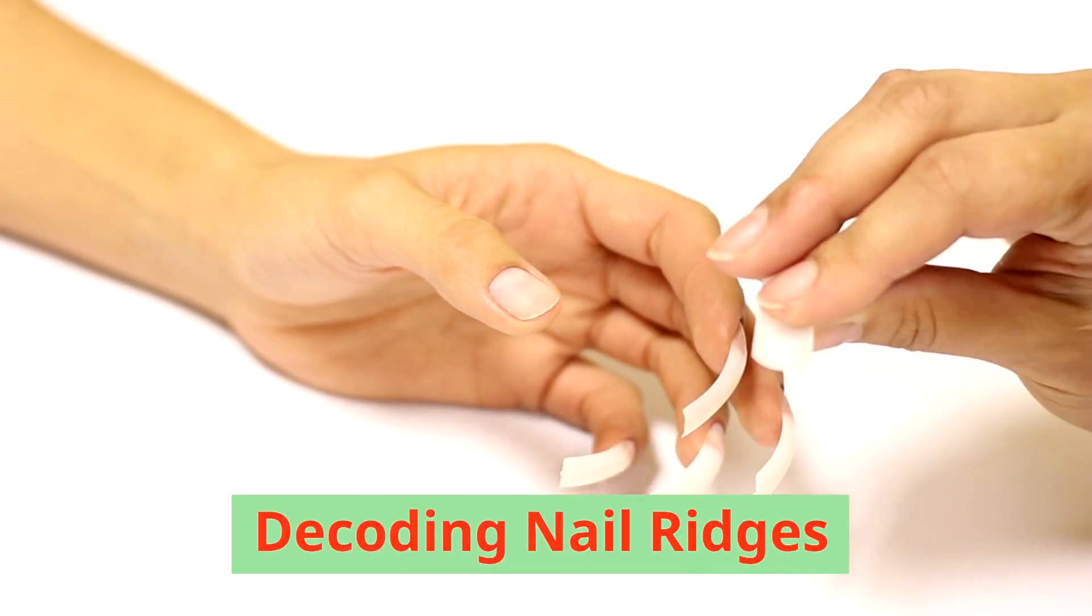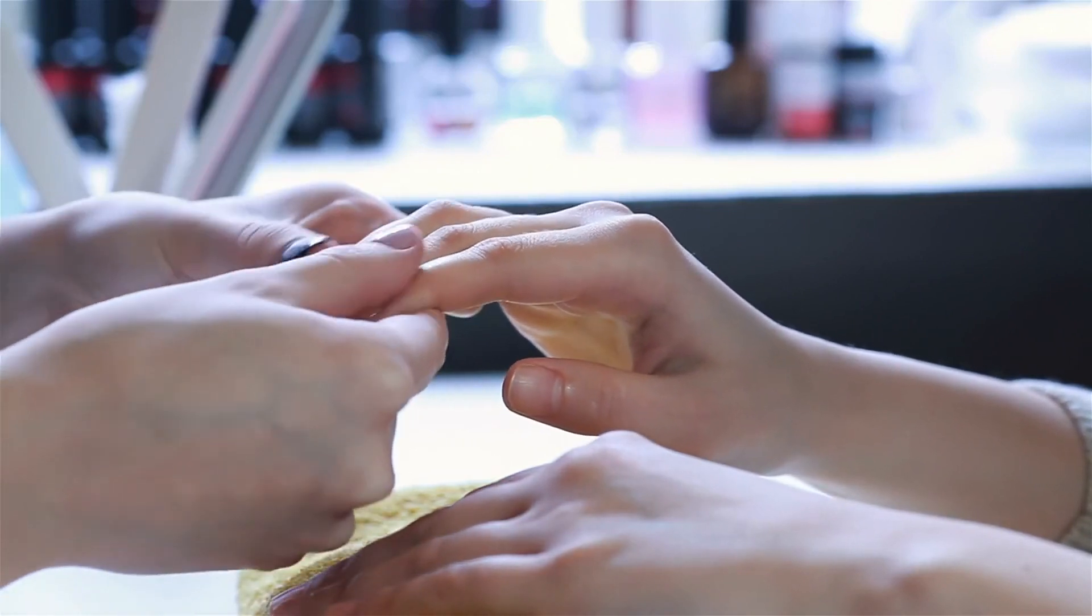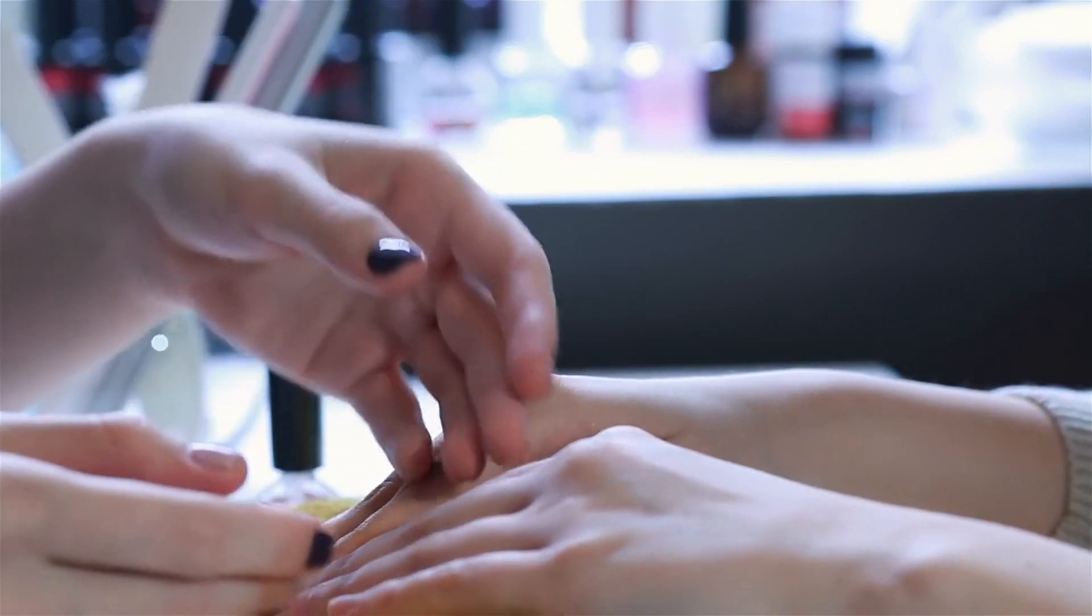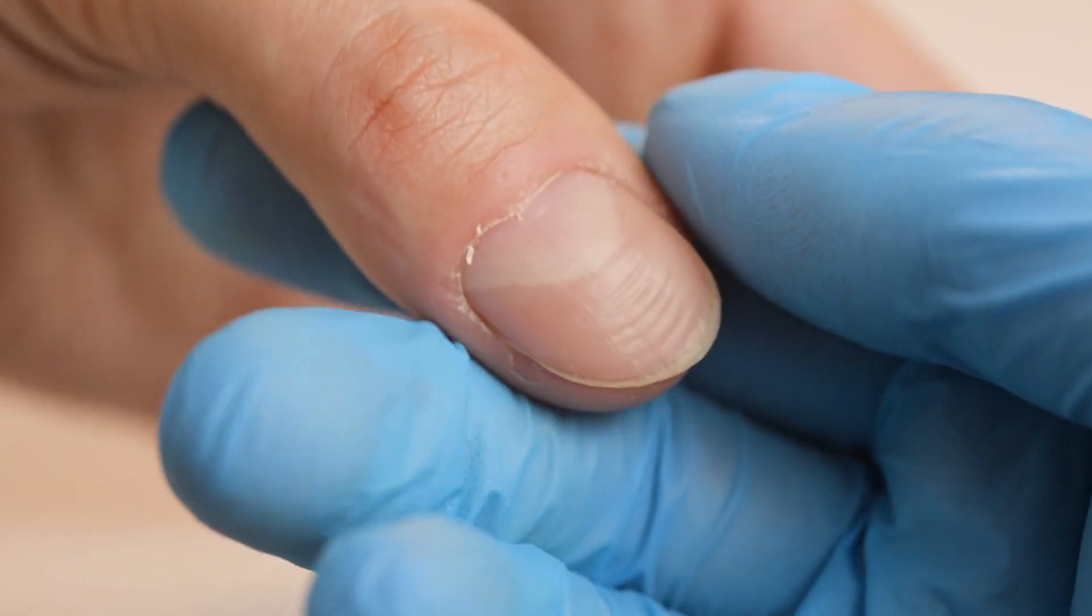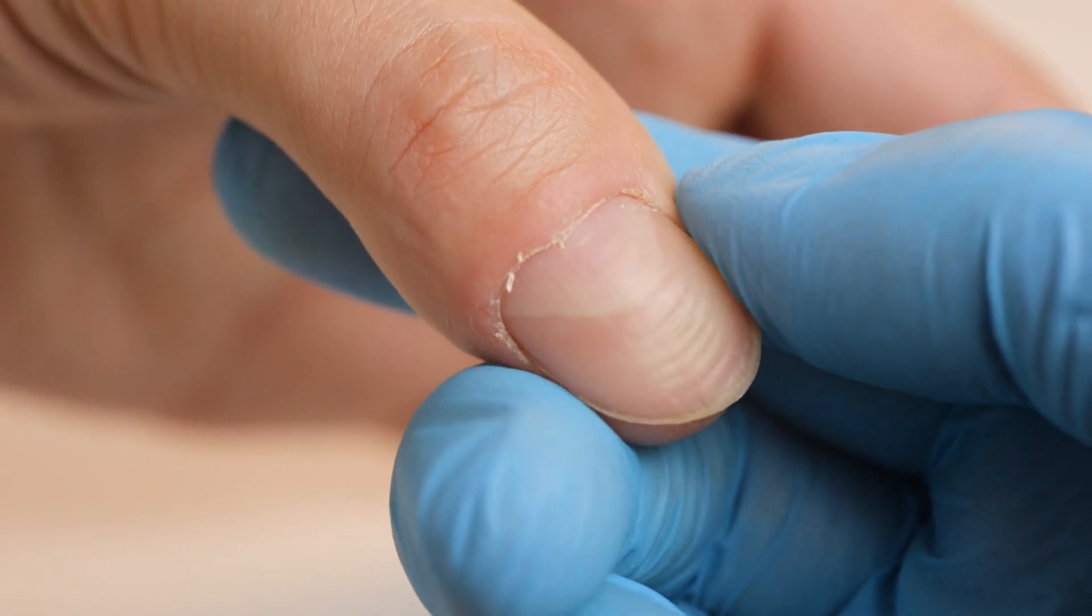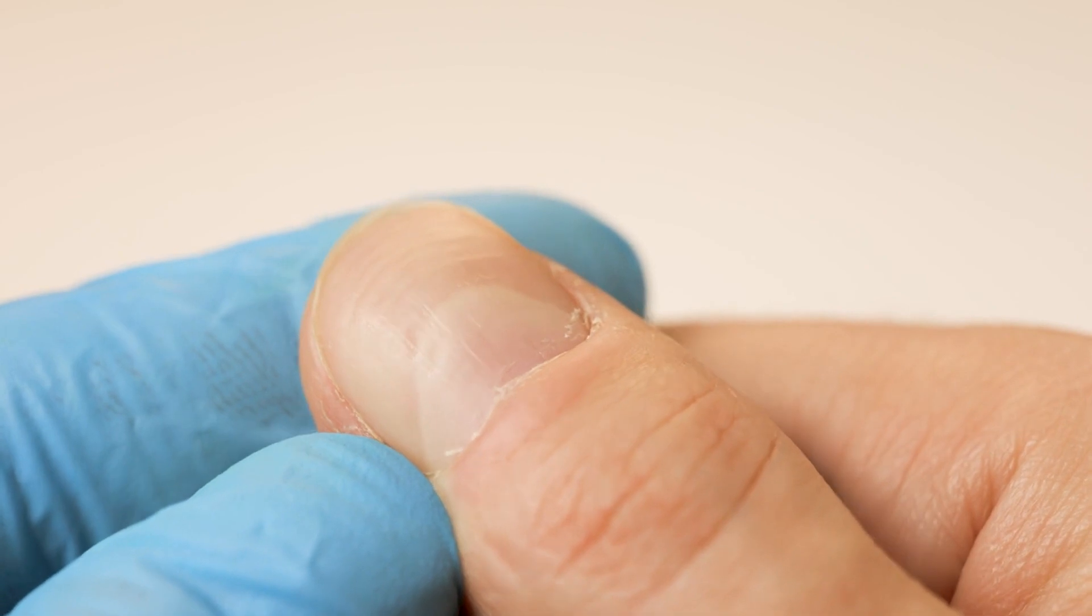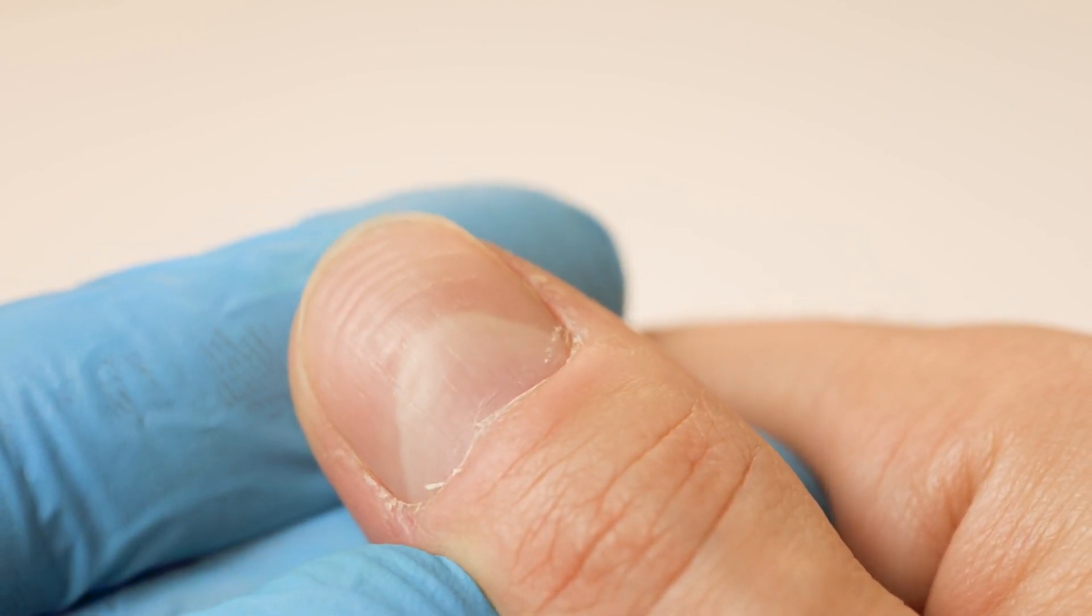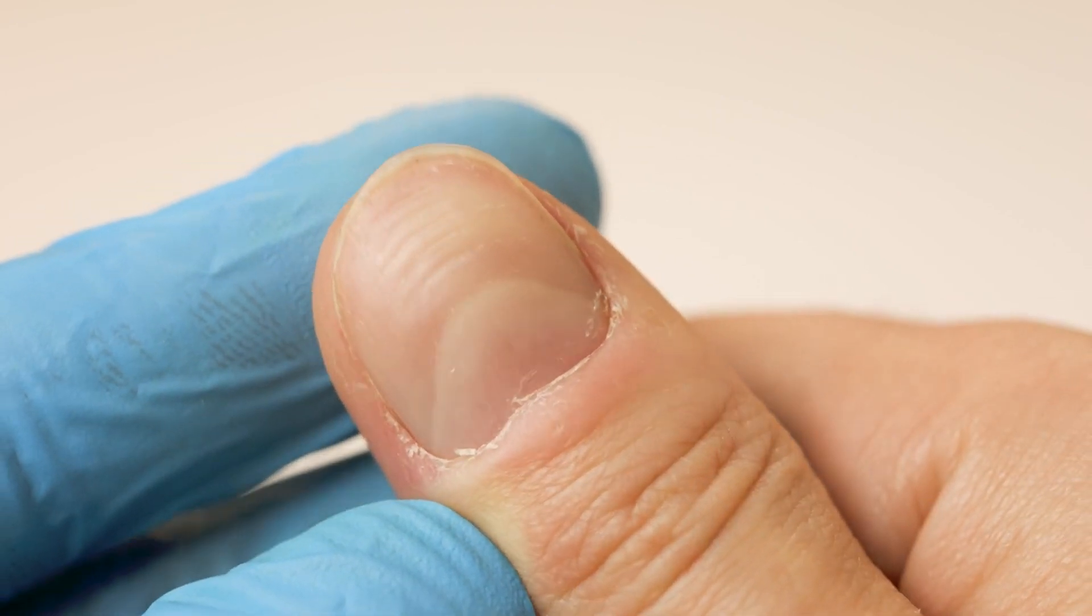Decoding nail ridges: Our nails, forged from the resilient protein keratin, possess a profound connection with our inner vitality. Serving as reflective mirrors, they offer glimpses into the intricate equilibrium of our internal well-being. Vertical ridges emerge as silent heralds, conveying tales of potential health imbalances. While fleeting, faint ridges may innocently traverse our nail beds, deeper furrows unfurl as ominous banners, signaling underlying deficiencies or health afflictions lurking beneath the surface.